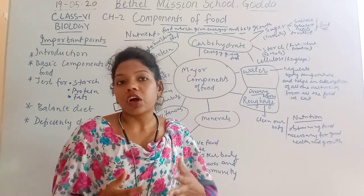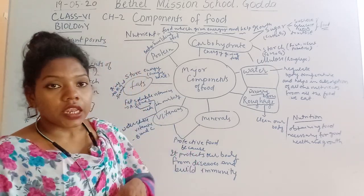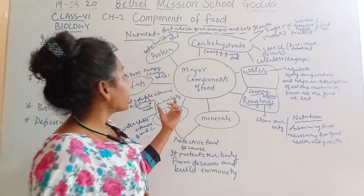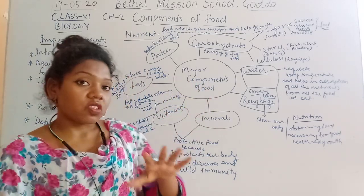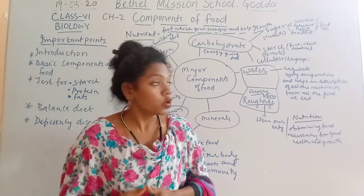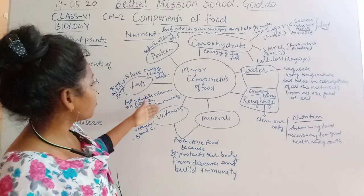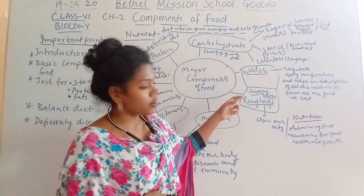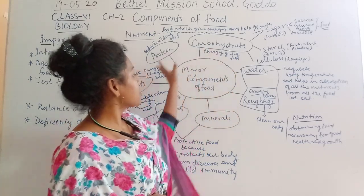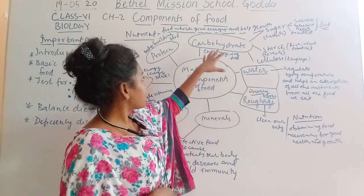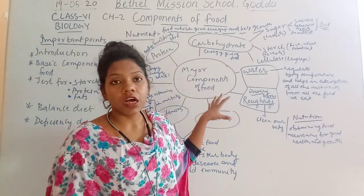It's not just because of hunger, but food gives us energy. Now, the major components of food — there are five major components: carbohydrates, protein, fats, vitamins and minerals. Water and roughage are also essential but are not counted among the five major components. These five are the main major components of food which are very necessary for our body.